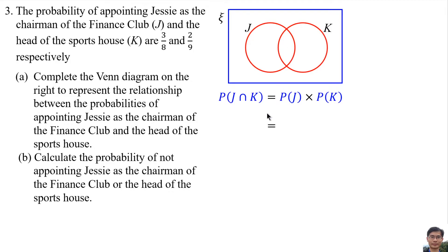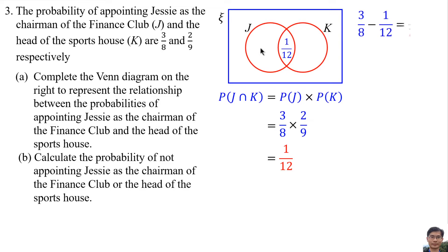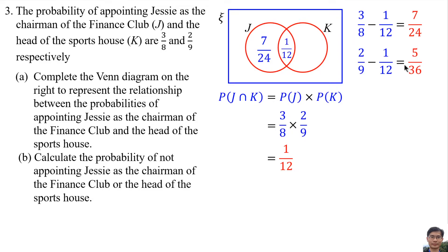P(J intersect K) is 3 over 8 times 2 over 9, which gives 1 over 12. The probability of appointing Jesse as chairman of the finance club only is 3 over 8 minus 1 over 12, which equals 7 over 24. The probability of appointing Jesse as head of the sport house only is 2 over 9 minus 1 over 12, which equals 5 over 36.